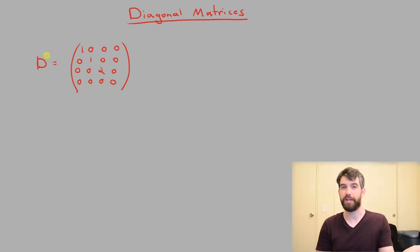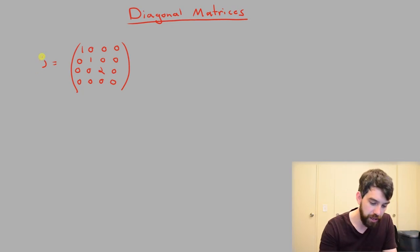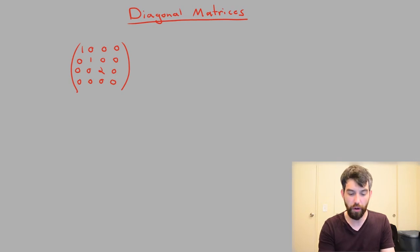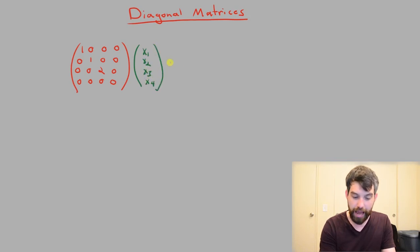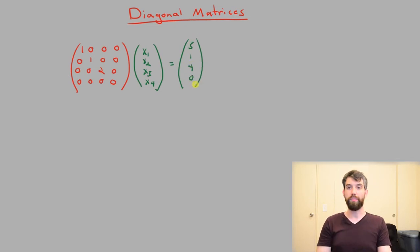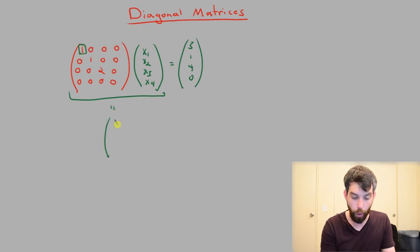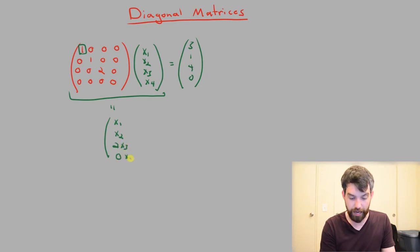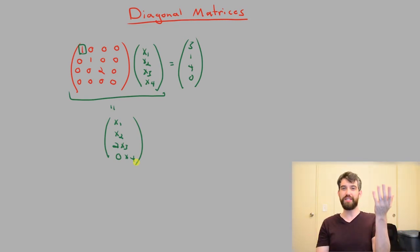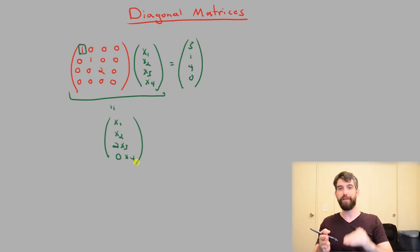So why do I like diagonal matrices so much? Well, basically every computation that I could do in linear algebra is almost completely trivial if I have a diagonal matrix. For example, suppose I'm interested in solving a system: this matrix D times the arbitrary vector (x1, x2, x3, x4) set equal to some column vector, say (3, 1, 4, 0). The diagonal matrix times a vector is really easy — you just take the vector and multiply it by the four different diagonal elements, giving 1·x1, 1·x2, 2·x3, and 0·x4.